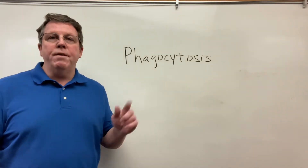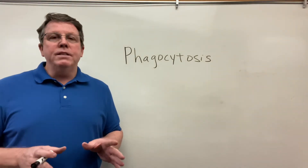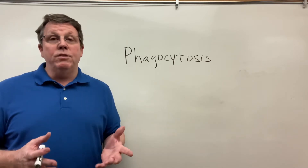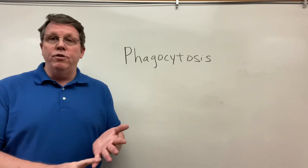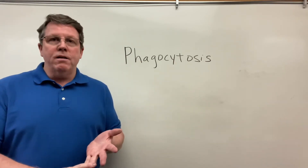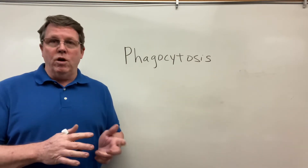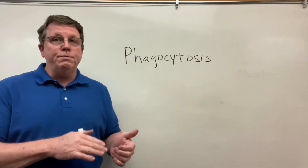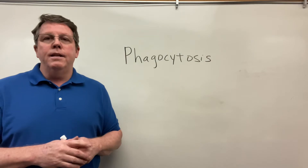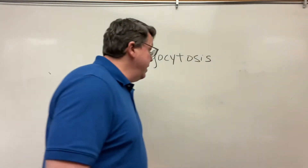Hi everybody, so today I'm going to be talking about phagocytosis, and basically look at phagocytosis being done by two types of white blood cells, which are going to be the neutrophils and the macrophages. In this video I'm also going to talk about the oxidative, or also known as respiratory burst, and NETs too. So let's go ahead and get started.